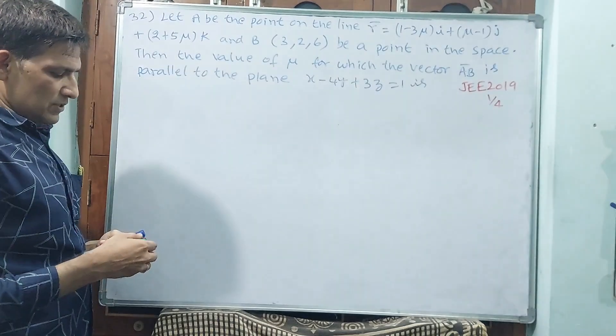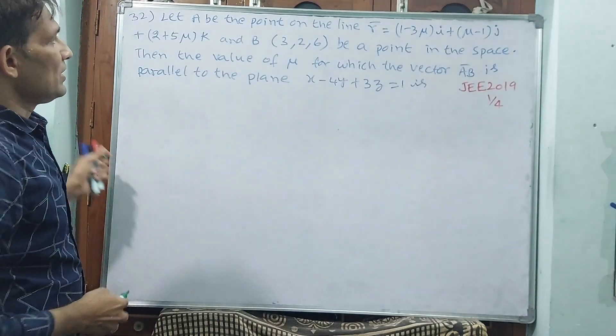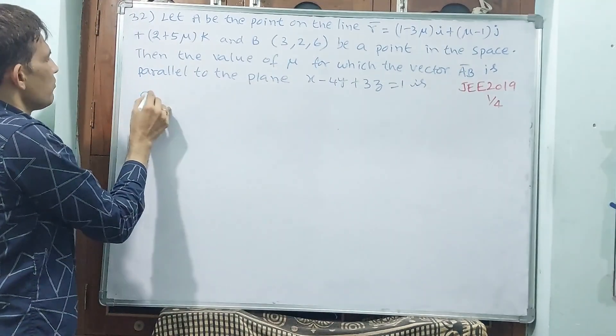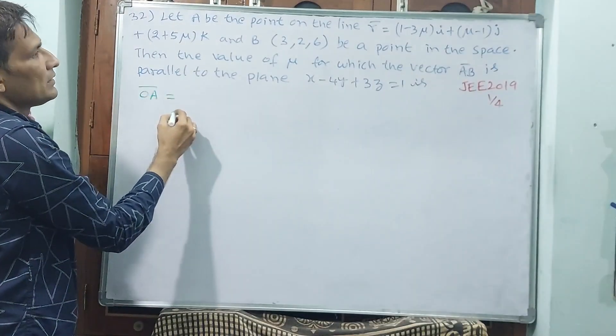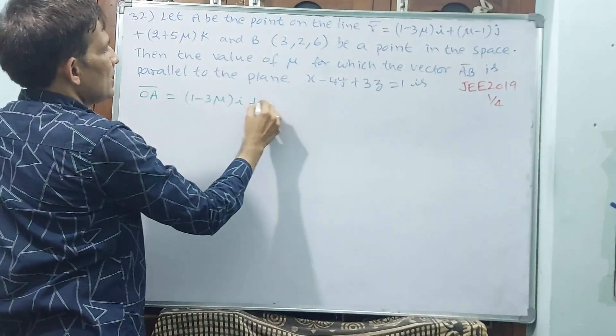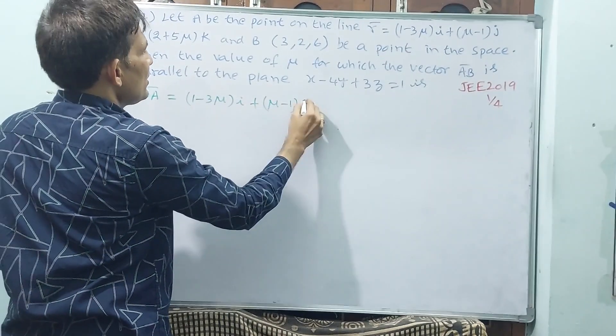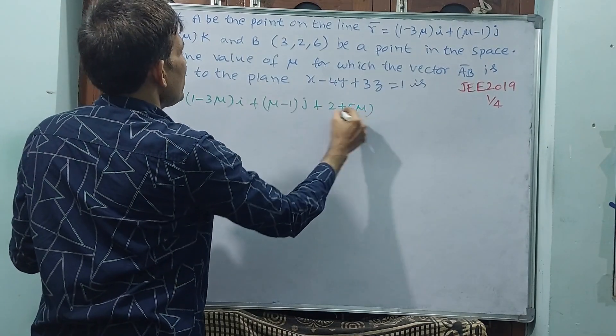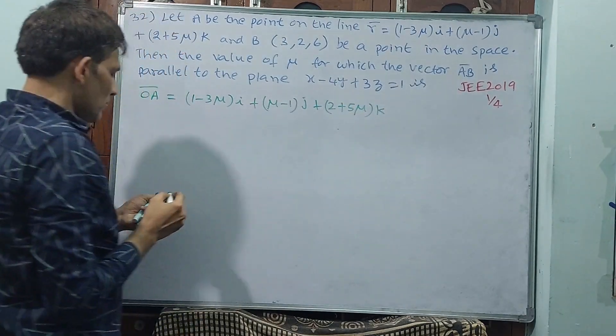See how we are going to solve this question. See position vector, I am writing now. Vector AB means, see the position vector OA is equal to (1 minus 3μ)i plus (μ minus 1)j plus (2 plus 5μ)k. See this will be your position vector OA.